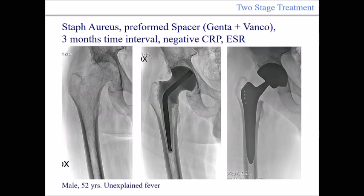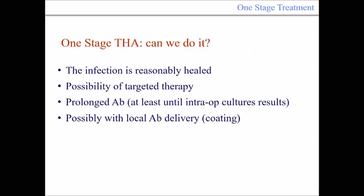Another case: a 52-year-old male with unexplained fever and no other risk factors. Staphylococcus aureus was identified. We performed a preformed spacer with gentamicin, a three-month time interval, with negative CRP. This is the second stage result.